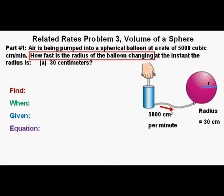What do we need to find? We need to find how fast the radius of the balloon is changing. So we'll call this dr/dt for the change in radius over the change in time.